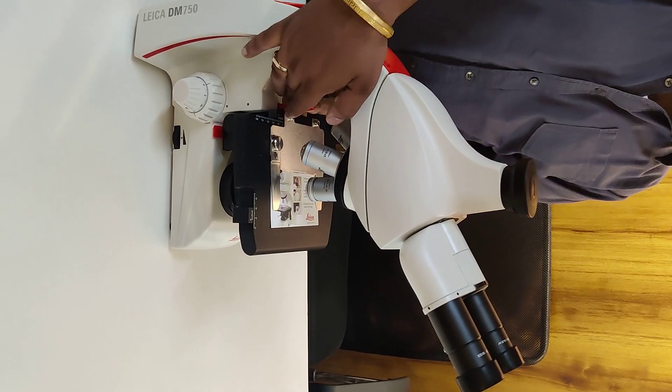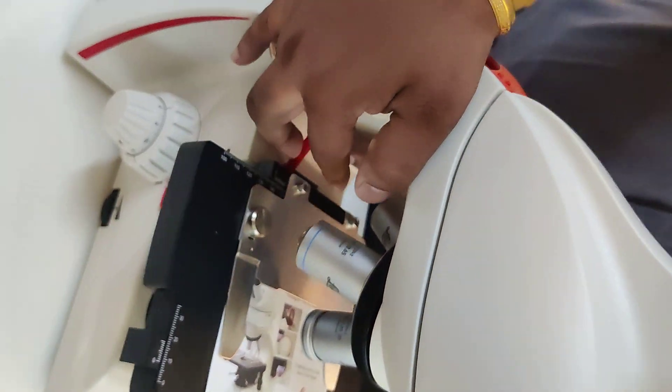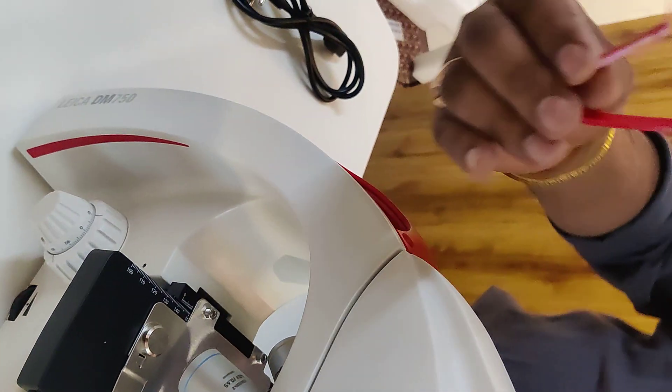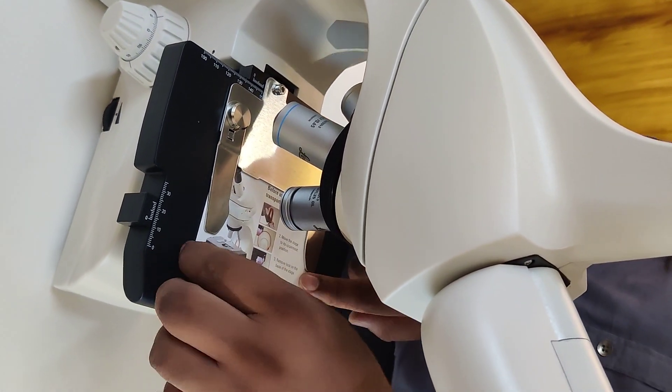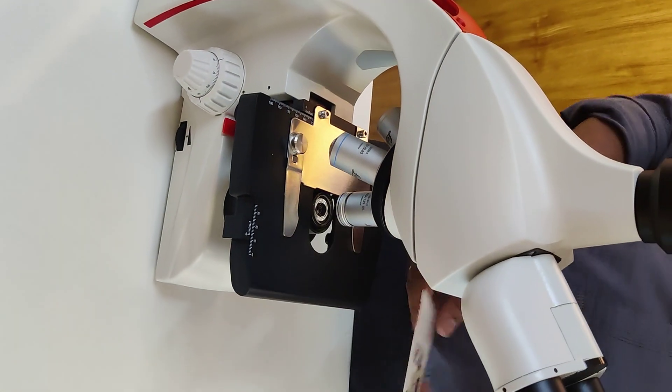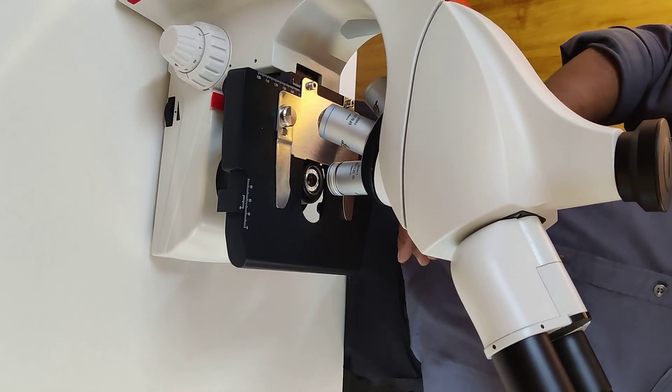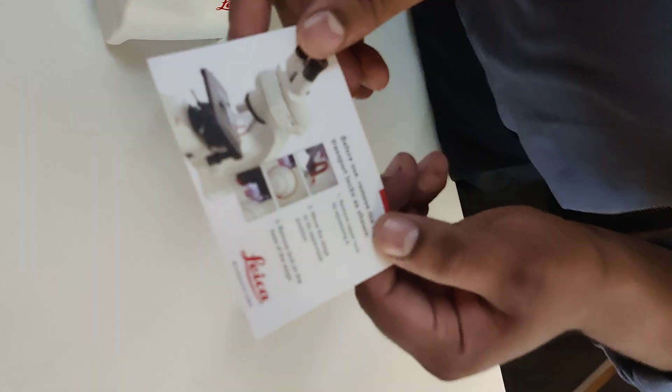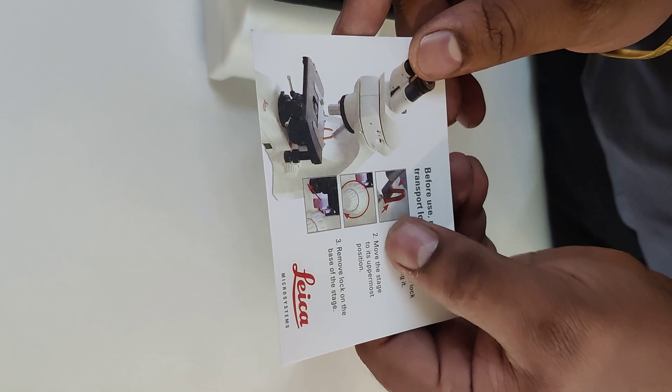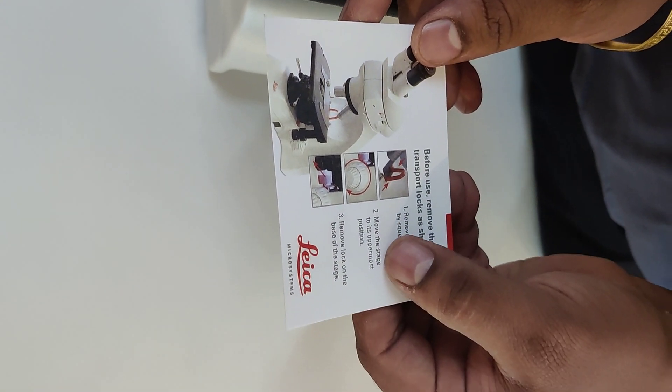Now as you can see there is a lock over here. You just have to take this clamp out. Remove the upper lock, as you can see it is written. Move the stage to its uppermost position.